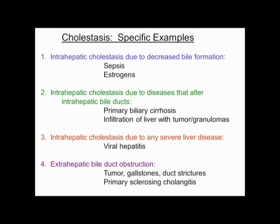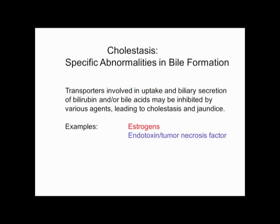There are four categories of diseases that can cause cholestasis. Drugs and chemicals can cause the liver just not to make bile. There are diseases of the small bile ducts in the liver. Any disease that wipes out liver cells can cause bilirubin to go up, but that's not really considered cholestatic disease per se. And then there are diseases causing obstruction anywhere outside the liver. You can block bile flow by blocking transporters on the canalicular membrane of the hepatocyte — the two major ones are estrogens and endotoxin/tumor necrosis factor.